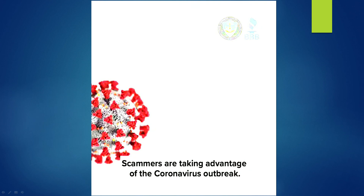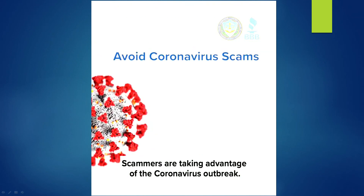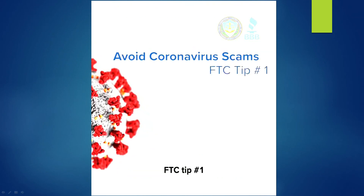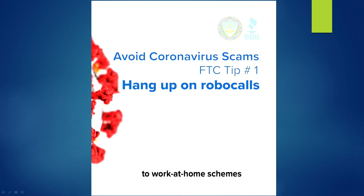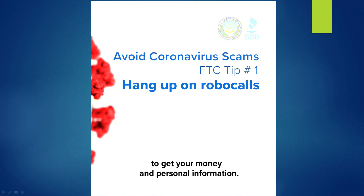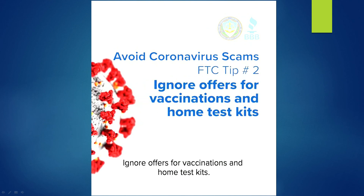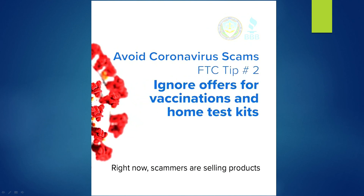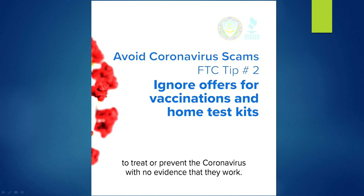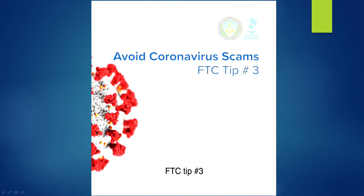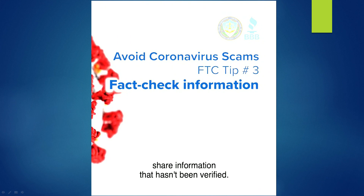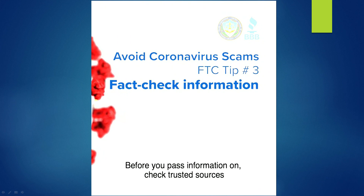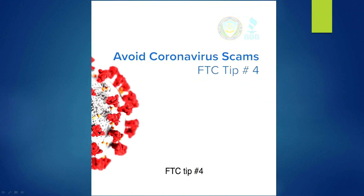Before we end, I want to show you a few videos by the FTC. Scammers are taking advantage of the coronavirus outbreak. FTC tip number one: hang up on robocalls — scammers are calling to pitch everything from fake coronavirus treatments to work-at-home schemes to get your money and personal information. FTC tip number two: ignore offers for vaccinations and home test kits. Right now, scammers are selling products to treat or prevent the coronavirus with no evidence that they work. FTC tip number three: scammers and sometimes well-meaning people share information that hasn't been verified. Before you pass information on, check trusted sources like federal, state, and local government websites.